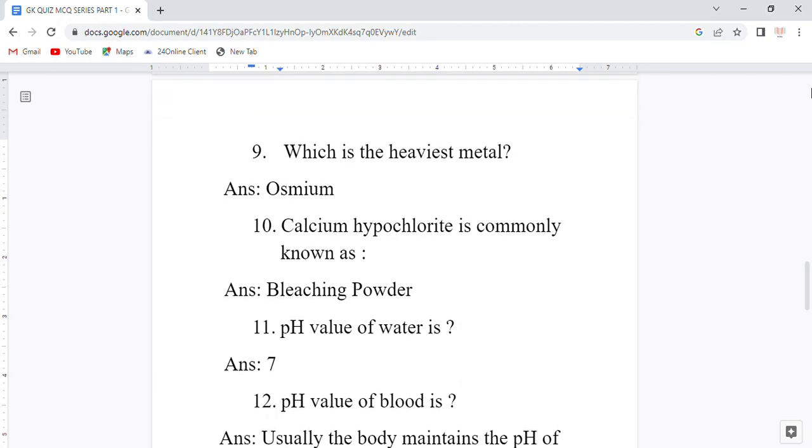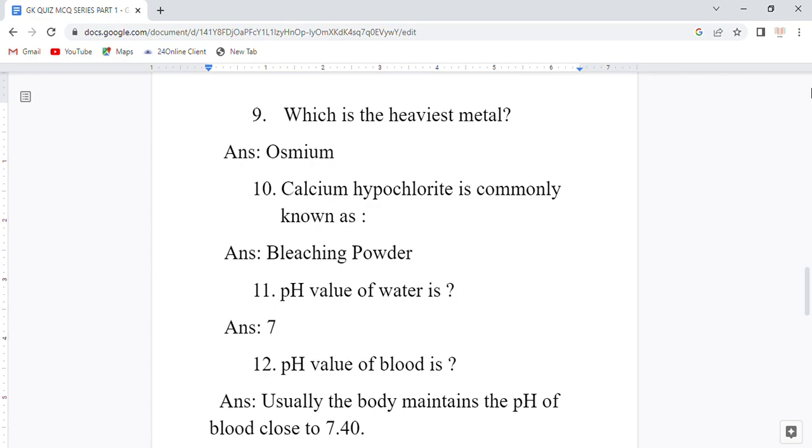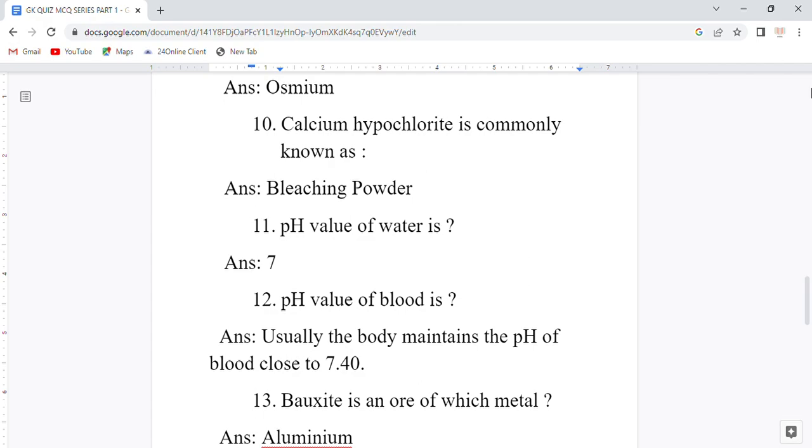Eleventh question: pH value of water is what? Answer is 7. Twelfth question: pH value of blood is what? Answer is approximately 7.4. The body maintains our blood pH value close to 7.4.